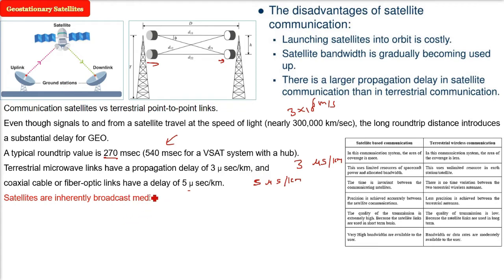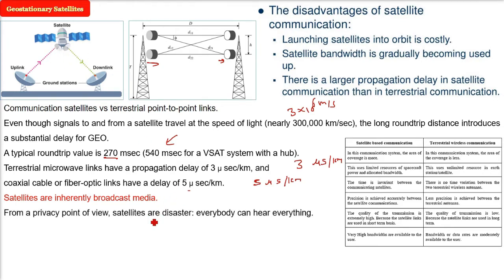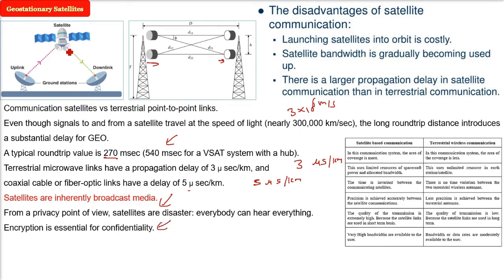From the privacy point of view, satellites are a disaster because everybody can hear everything. To maintain confidentiality, encryption is essential. Encryption means sending data in a changed form — for example, sending AB instead of XY, and then decrypting it back to XY at the receiving end.